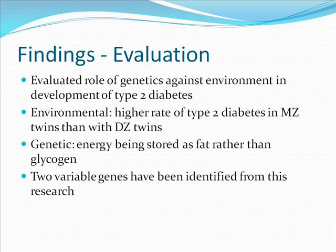The research paper evaluates the role of genetics against environment in the development of type 2 diabetes. One aspect found regarding the role of genetics was that some type 2 diabetes subjects are highly able to survive when hungry, which is due to more energy being stored as fat than as glycogen. This shows that more fat is deposited, and the deposited fat will possibly deposit in beta cells. If this occurred, insulin would be acutely stimulated, but gradually the response to glucose decreases as a long-term effect, leading to less insulin.